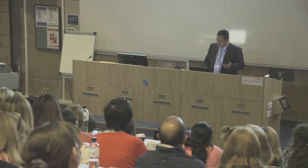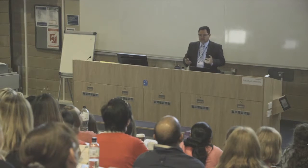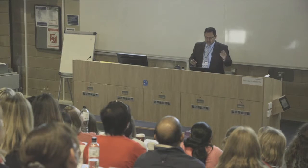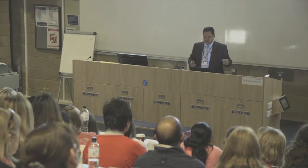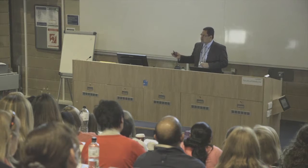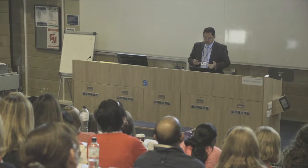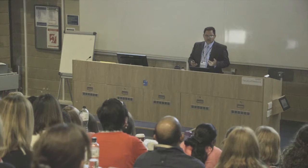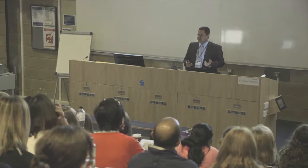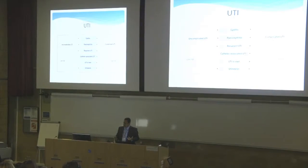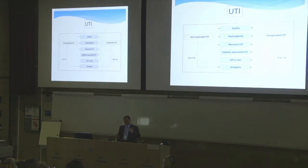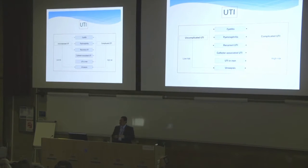What is a urinary tract infection and how does it manifest? You have a mixture. You can have uncomplicated urinary infection on one side to a complicated urinary infection, and then you have cystitis, lower tract, pyelonephritis, recurrent infection, catheter-associated infection, infection in men, and urosepsis — infection that causes admission because patients are unwell with a temperature.